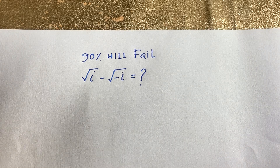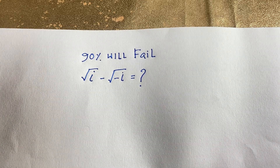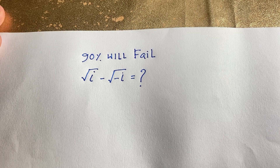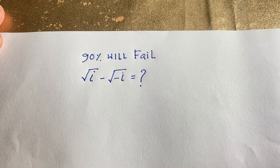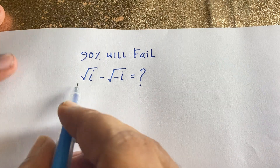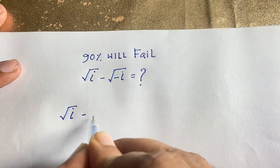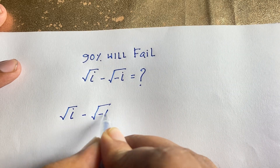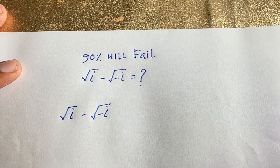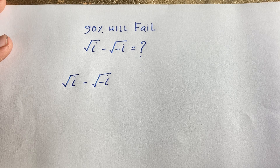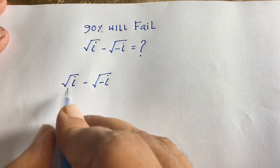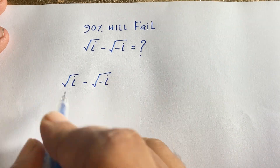Hello everyone. In this video we solve this interesting complex number question: square root of i minus square root of minus i is equal to what. Let's see how to solve this interesting math question. Our expression is √i − √(−i).